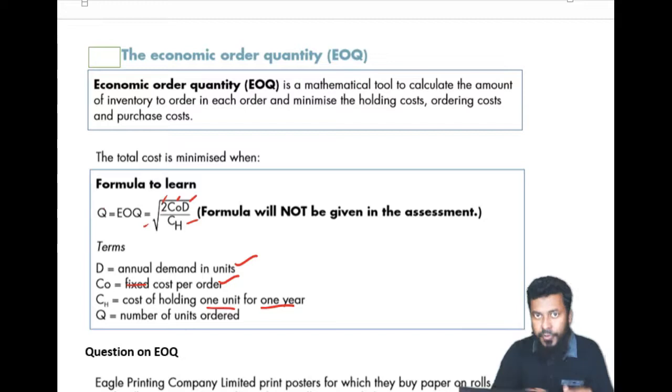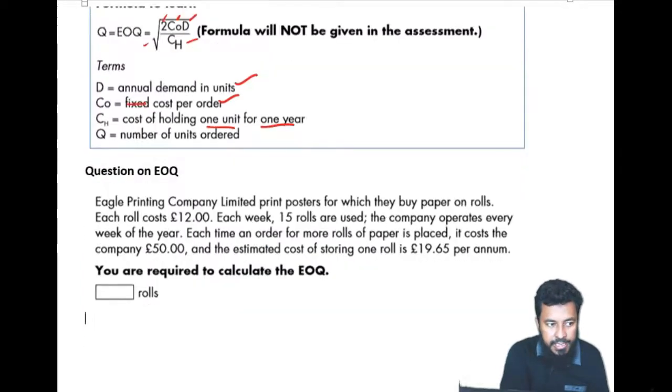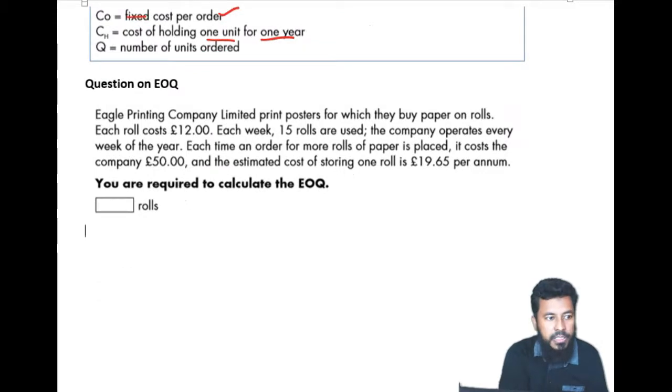So if you remember the formula, EOQ is very easy for you. Let's check out one quick question. The question on EOQ is Eagle Printing Company Limited print posters for which they buy paper on rolls.